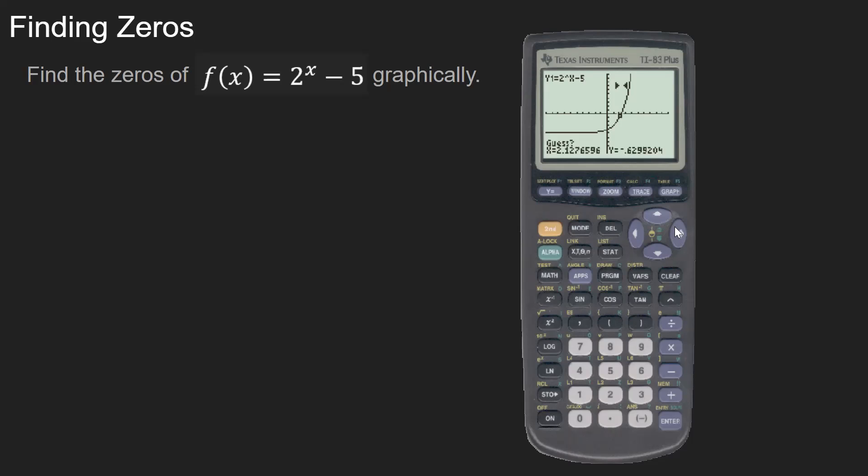And then put the cursor near the zero. And the graphing calculator will tell you it's 2.3219. So remember, for the rounding rules for AP Calc, this would either round to 2.322, or you could truncate it at 2.321, either way.